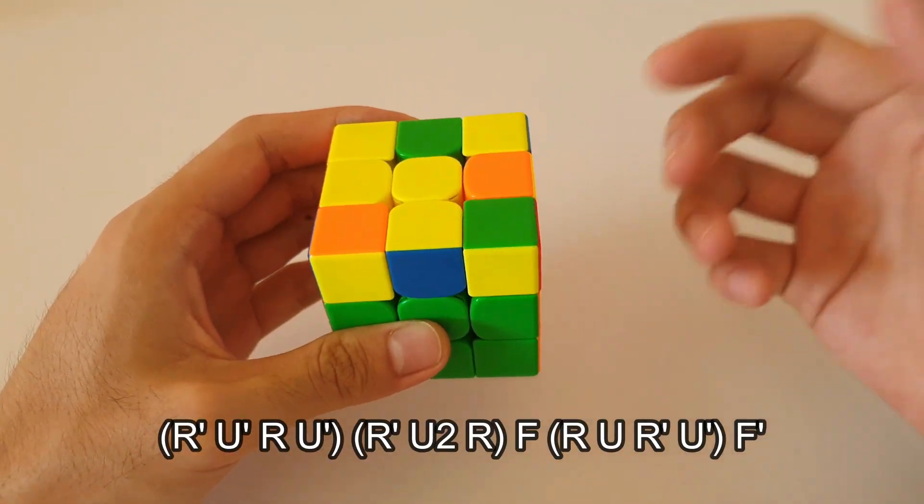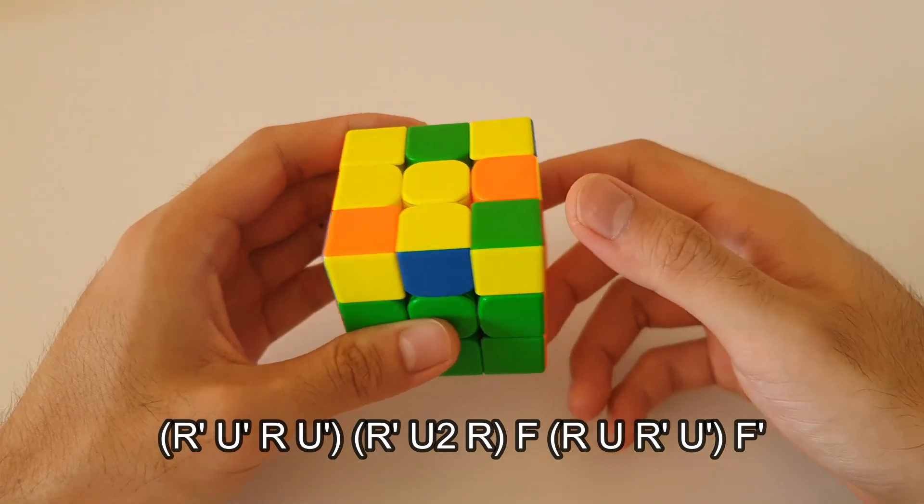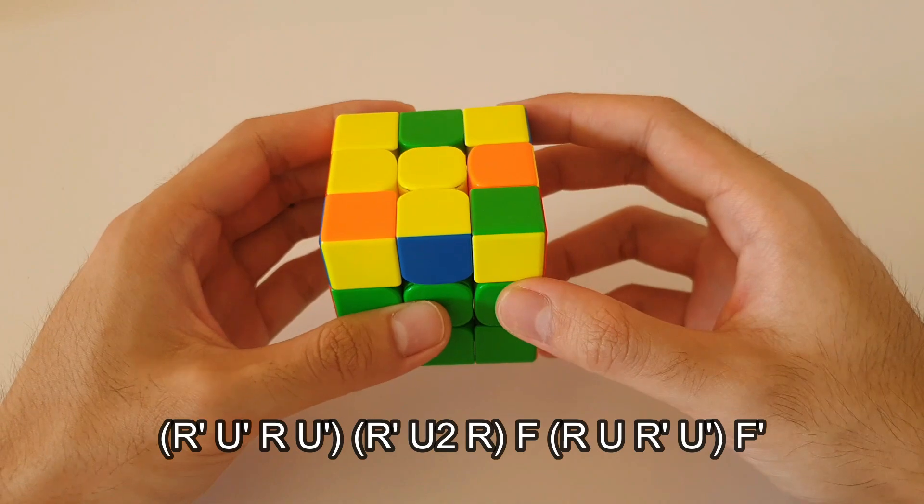And this just makes the algorithm a lot more efficient and you don't have to do that U2 in the middle of the algorithm. So from here, the back sune will start something like this.